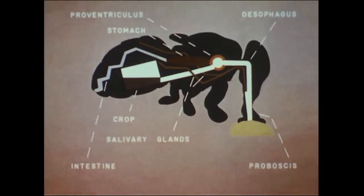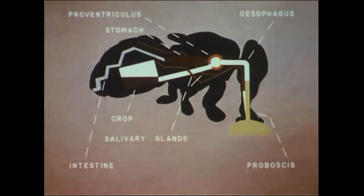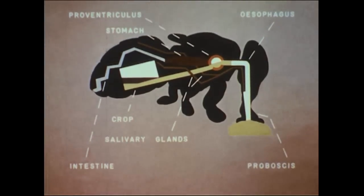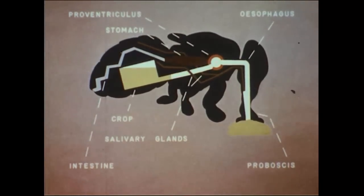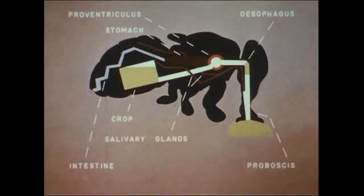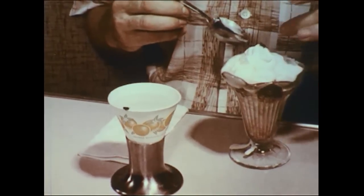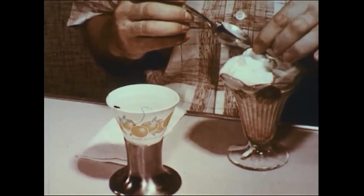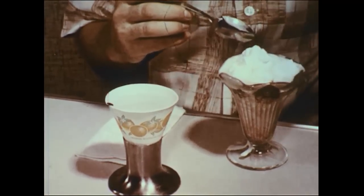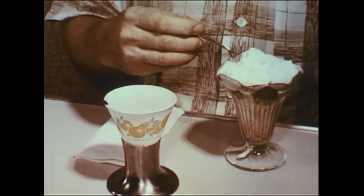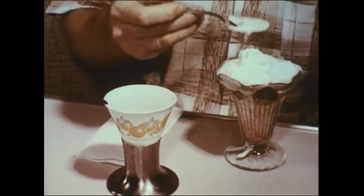The proboscis then sucks up the food, germs included, into the esophagus. The proventriculus directs the flow of food into the crop. Supposing this fly were to alight next on your strawberry sundae. The filthy germ-infested food in the fly would be regurgitated. The fly's feet would add more contamination. A single housefly has been known to carry over six and a half million bacteria at one time. It becomes obvious why houseflies are such a health menace.